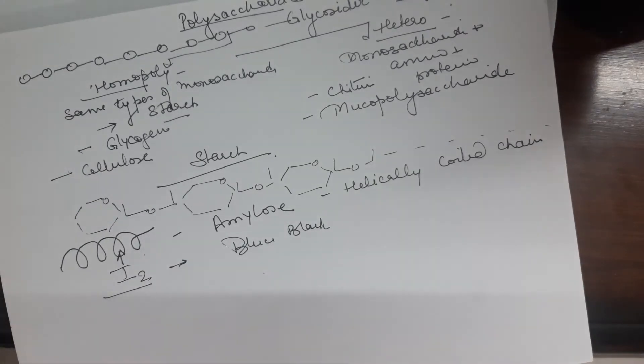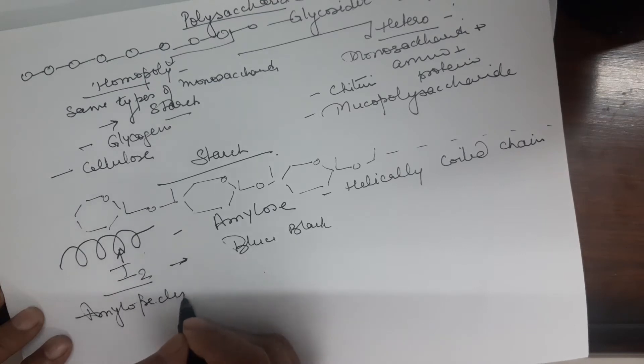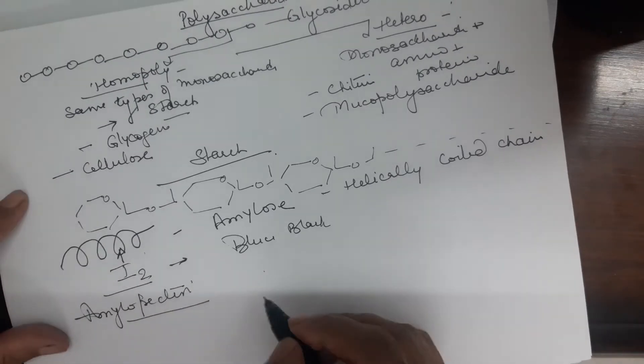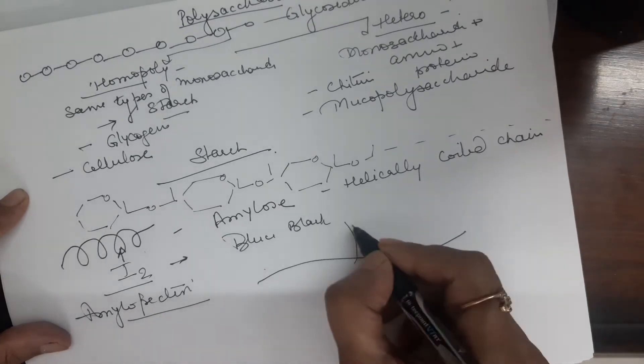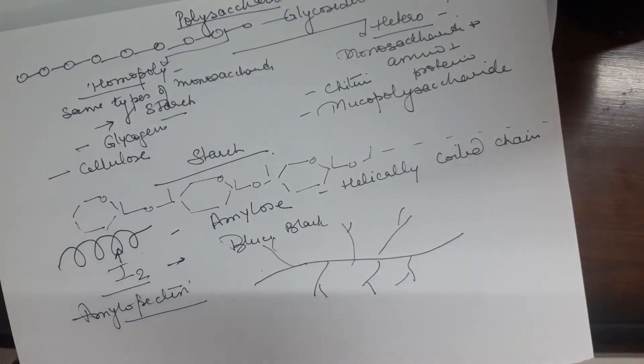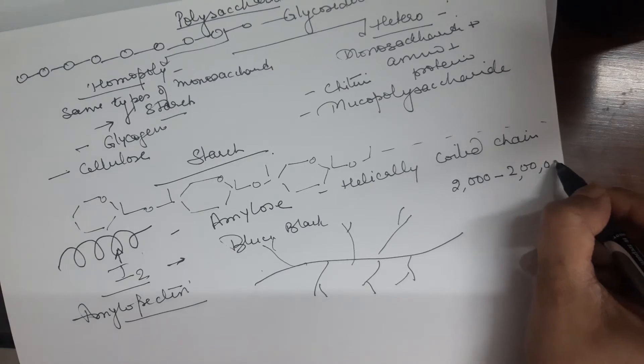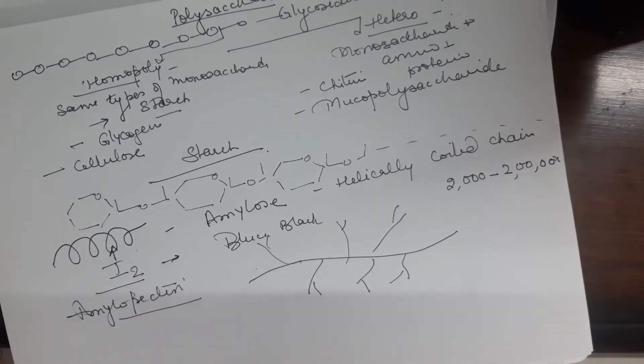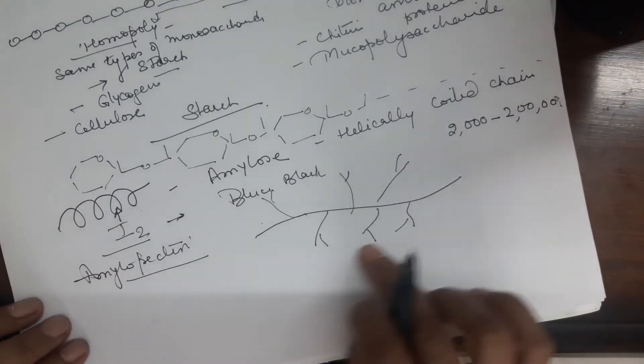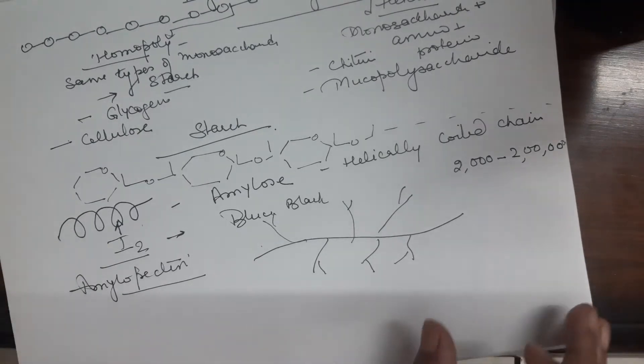So, only 1,4-alpha-glycosidic linkage is there in the amylose chain. But there is another form of starch also that is called amylopectin. In amylopectin, along with the straight chain, there are branching also like this. And the number of glucose molecules may be 2,000 to 2,000,000. Now, how are these branching formed? We know that straight chain is formed by 1,4-alpha linkage. But how is branching formed? Let us see.